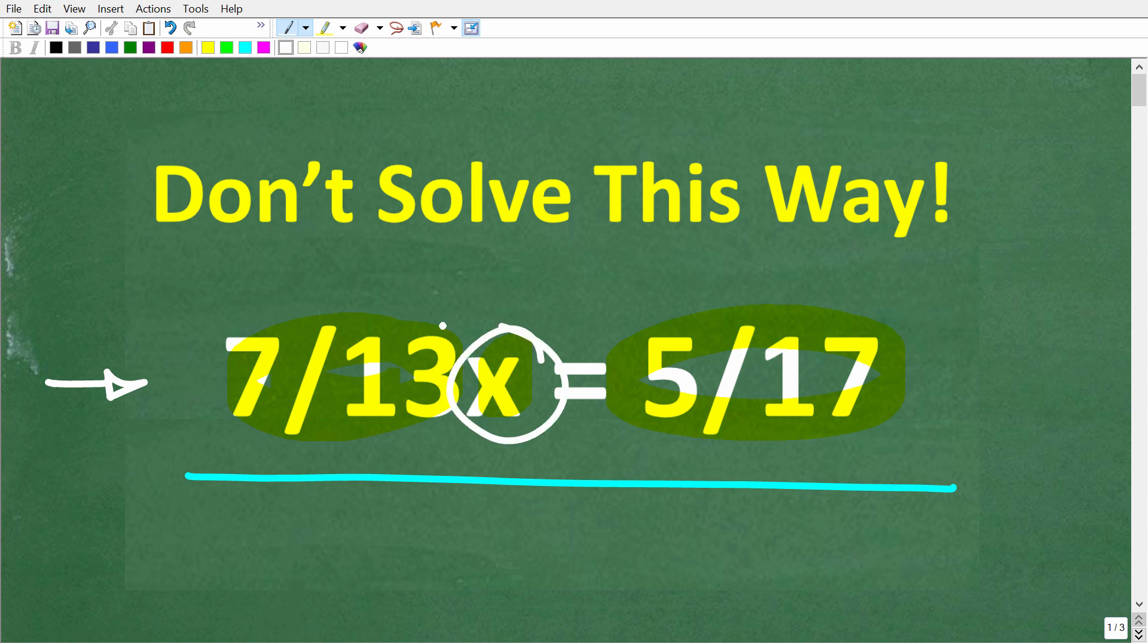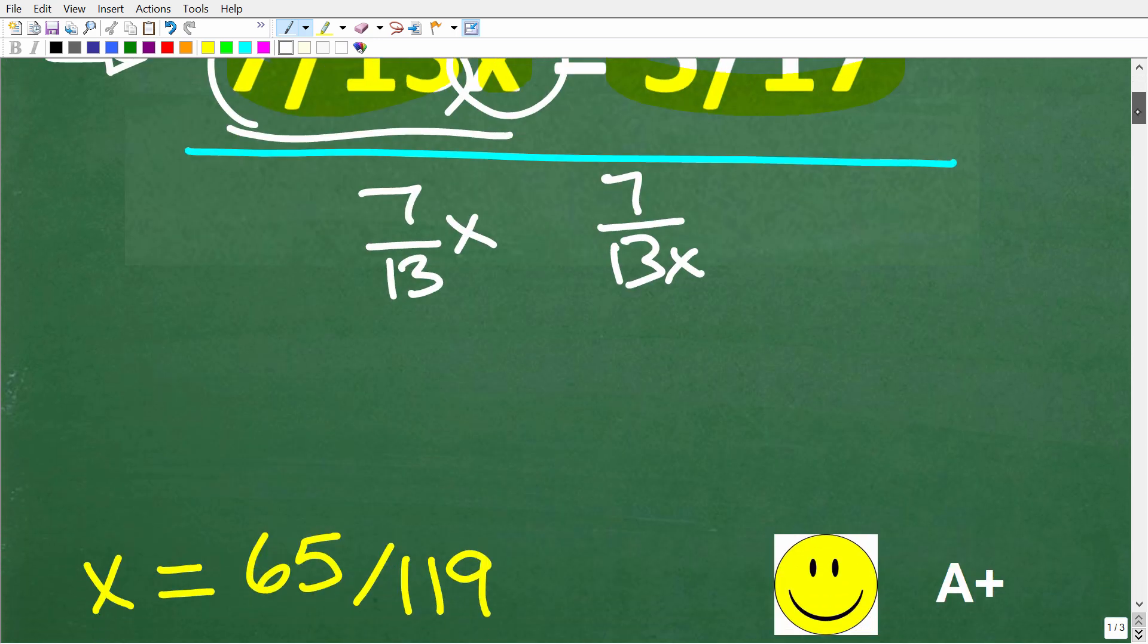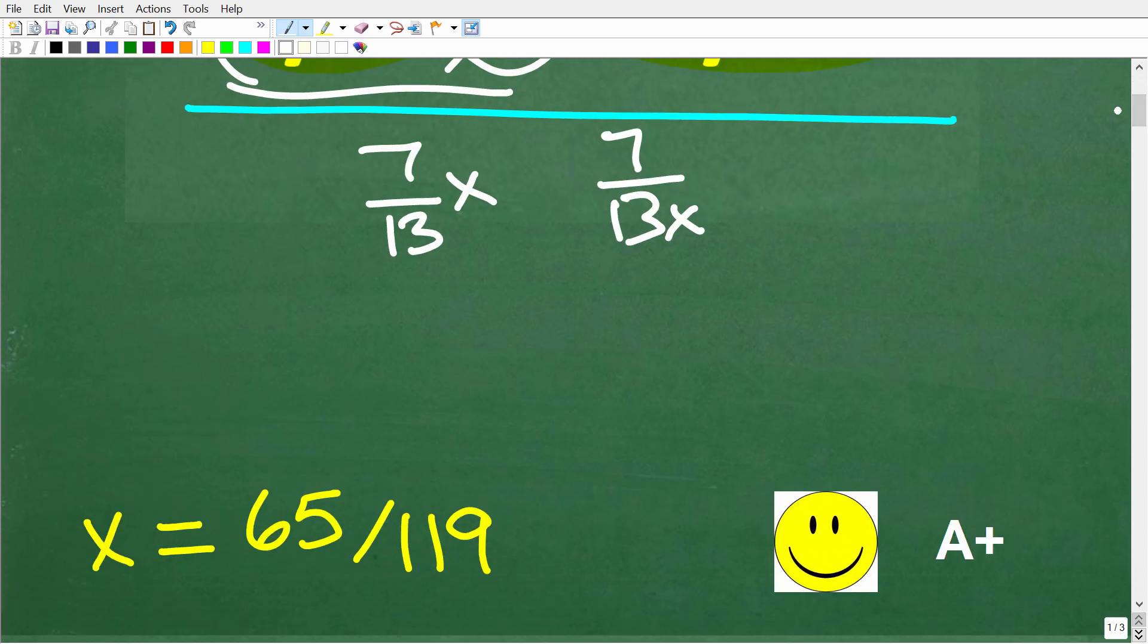Let's take a look at the solution. We have 7 over 13x, and that is 7 over 13x like so, not 7 over 13x in the denominator. So just to be clear here, that's what this is saying. So 7 over 13x is equal to 5 over 17. What is x equal to? The correct solution is x is equal to 65 over 119.